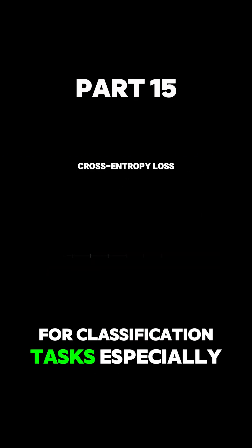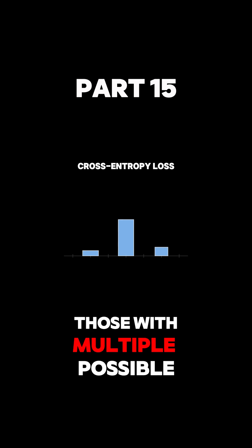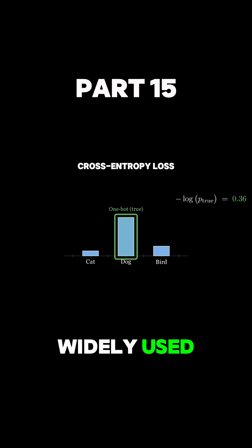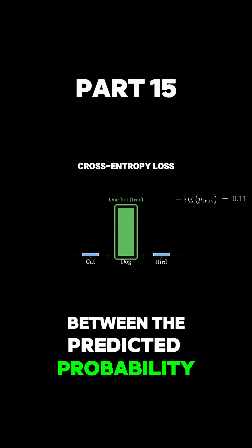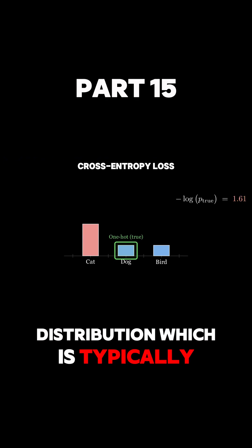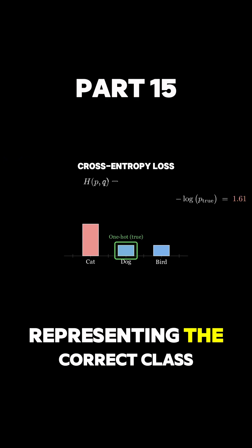For classification tasks, especially those with multiple possible classes, cross-entropy loss is widely used. It measures the difference between the predicted probability distribution and the actual distribution, which is typically a one-hot vector representing the correct class.